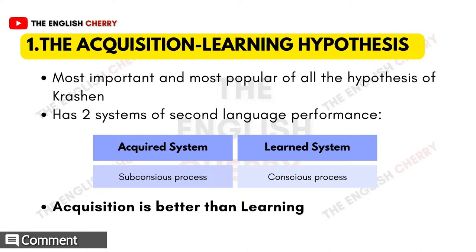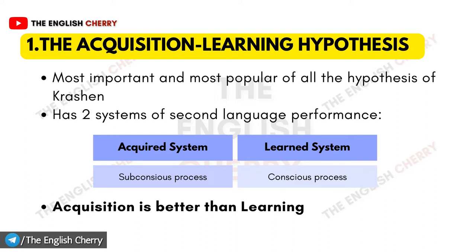The acquisition and learning hypothesis is the most important and most popular hypothesis among linguists and practitioners. According to Stephen Krashen, the performance of a second language is based upon two systems: the acquired system and the learned system. In the acquired system, learning follows a subconscious process — learning is acquired unknowingly. This process is followed in the mother tongue or first language, and for acquisition to take place, a natural environment is required where the learner undergoes interaction in the target language. The learned system is the opposite — it follows a conscious process where formal instructions are given so that the learner systematically learns grammar rules and other techniques of language.